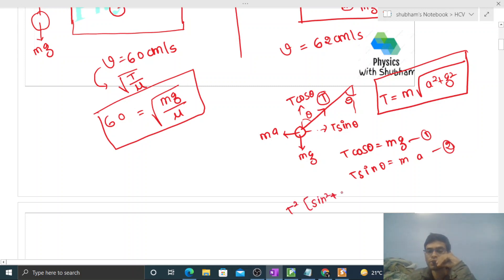Now this is equation 1 and this is equation 2. We will square both and add them. So T square sin square theta plus cos square theta, that is equal to m square a square plus g square. I have taken m square common. Now this sin square cos square becomes 1, so T square is nothing but m square a square plus g square, right? So from here T is m under root of a square plus g square.